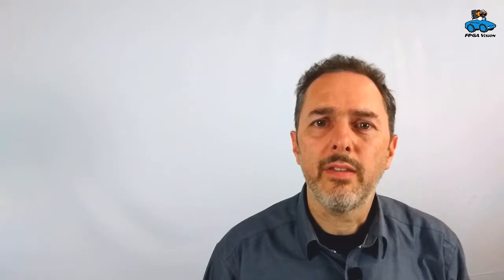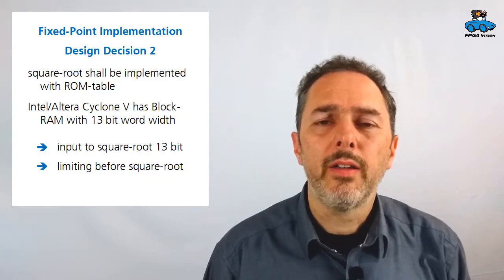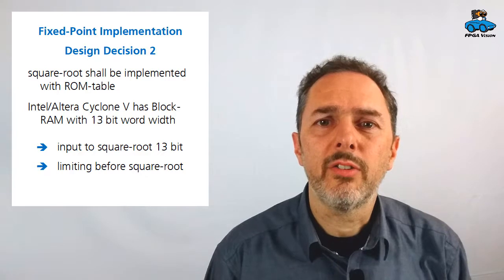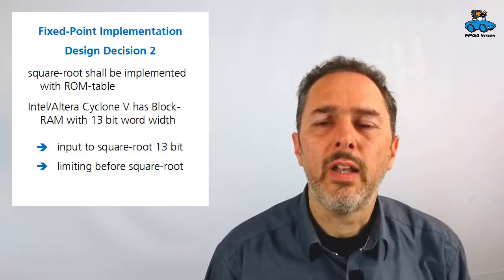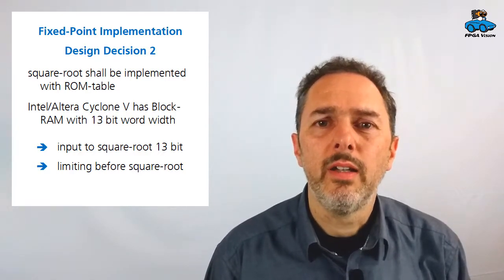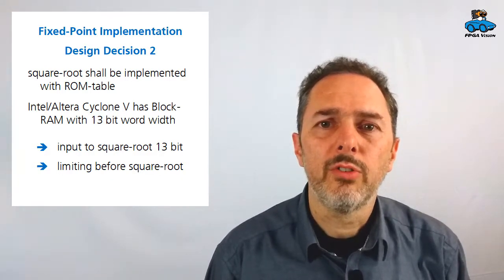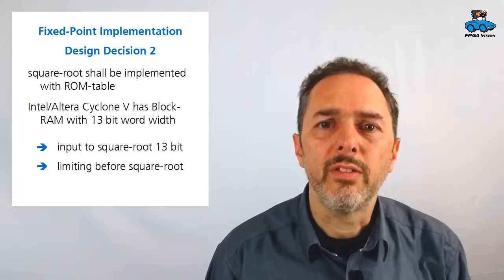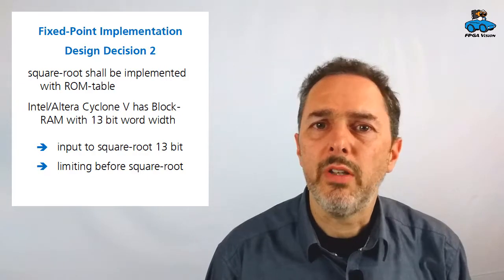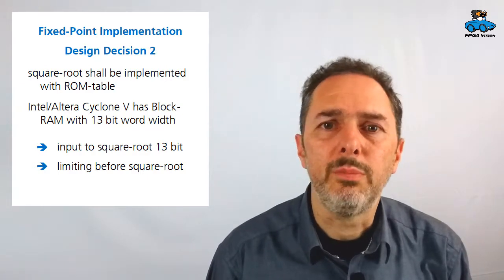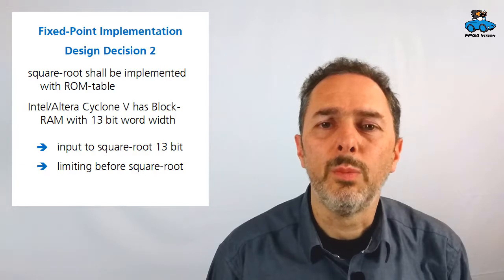For the next steps in the processing, we make another design decision, design decision 2. And we want to implement the square root with the block RAMs of an FPGA. We use an Intel Altera Cyclone 5, and the block RAMs in this FPGA have an input address width of 13-bit. So therefore, we decide that the input to the square root shall be 13-bit wide. And the output is 8-bit, because that's the value we need for the luminance value.